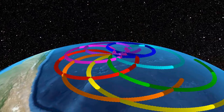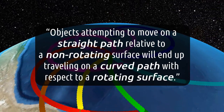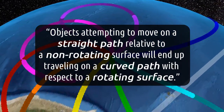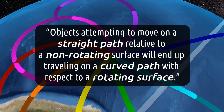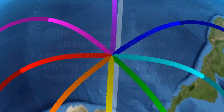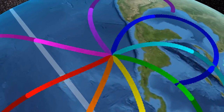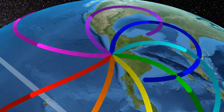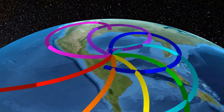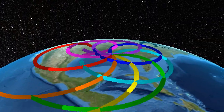We often describe it in the following way: objects attempting to move in a straight path relative to a non-rotating surface will end up traveling on a curved path with respect to a rotating surface. Here on Earth, objects moving in the Northern Hemisphere will find themselves deflecting to the right, and those in the Southern Hemisphere will deflect to the left. This is also why hurricanes spin in opposite directions on opposite hemispheres.